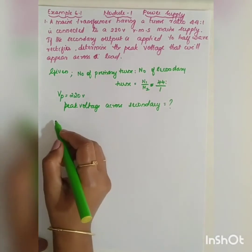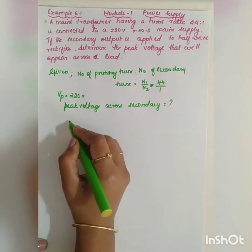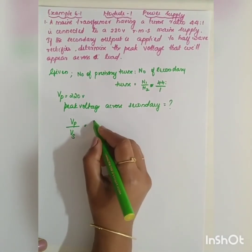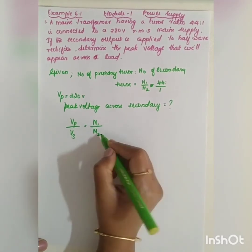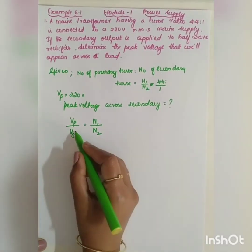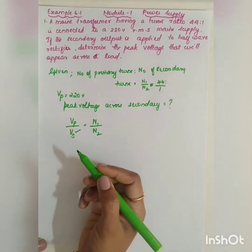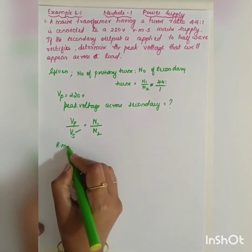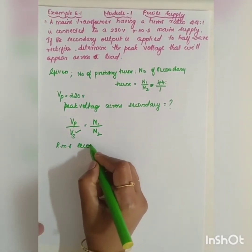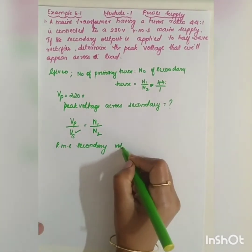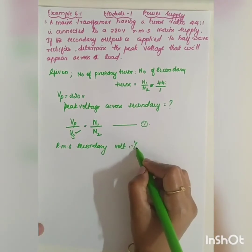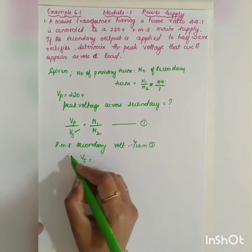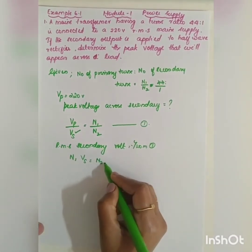Using the transformer equation: the ratio of primary voltage to secondary voltage equals the ratio of number of primary turns to secondary turns. VP is given, and from this equation we can find the secondary RMS voltage. Vs is equal to N2 multiplied by VP, divided by N1.